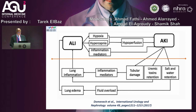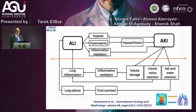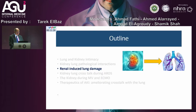Looking at this diagram, if the injury starts in the lung as acute lung injury, patients could suffer hypoxia, hypercapnia, and a lot of inflammatory mediators — all leading to AKI. And if the patient started by AKI, the resultant uremic toxins would affect the lung causing inflammation and acute lung injury. Tubular damage releases many inflammatory mediators, and a failing kidney causes salt and water retention, leading to pulmonary congestion, edema, and acute lung injury. It is a bidirectional relationship.